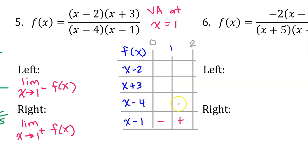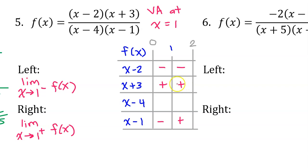None of the other factors will change signs at x equals 1, so they will each be either positive-positive or negative-negative. For these, just plug in 1 itself. For x minus 2: 1 minus 2 is negative, so negative for both intervals. For x plus 3: plugging in 1 gives positive 4, so positive-positive. For the denominator factor, plugging in 1 gives 1 minus 4, which is negative 3, so negative for both intervals near 1.